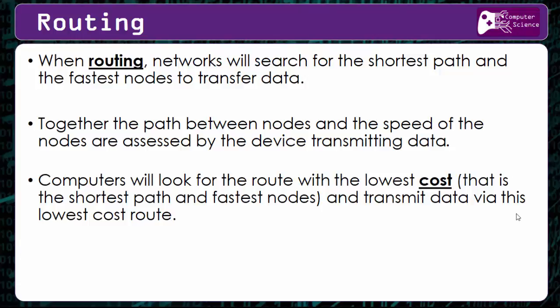Routing is about deciding the path that the data is going to take to get from one computer to another. When routing, the network searches for the shortest path and also the one which uses the fastest nodes in order to transfer that data. It's looking for the lowest cost — the route that has the shortest path and the fastest nodes — and it will transmit the data via this lowest cost route.